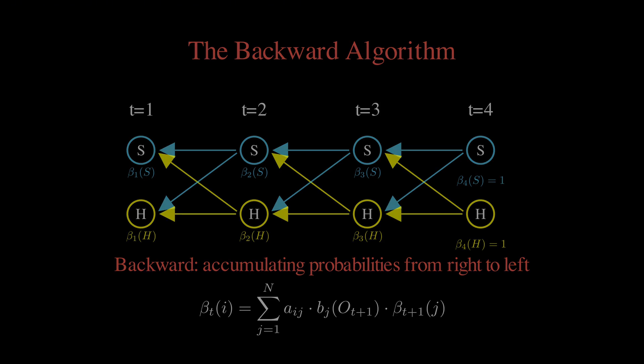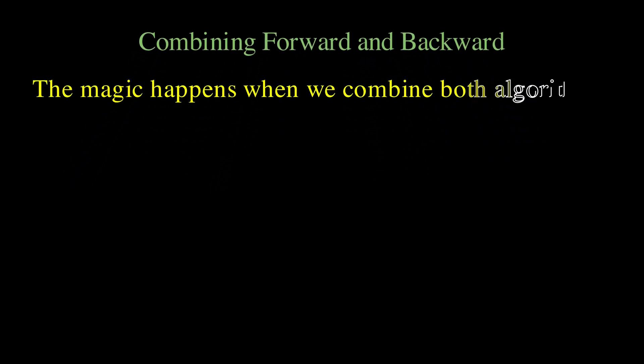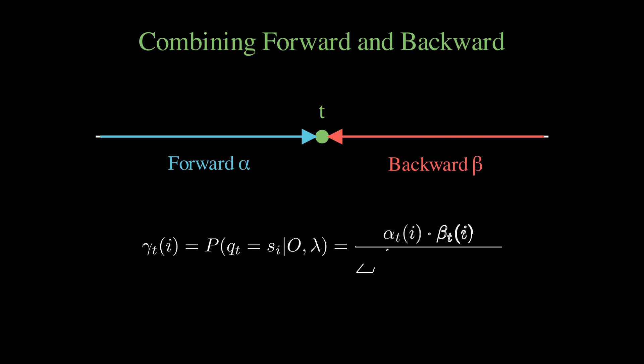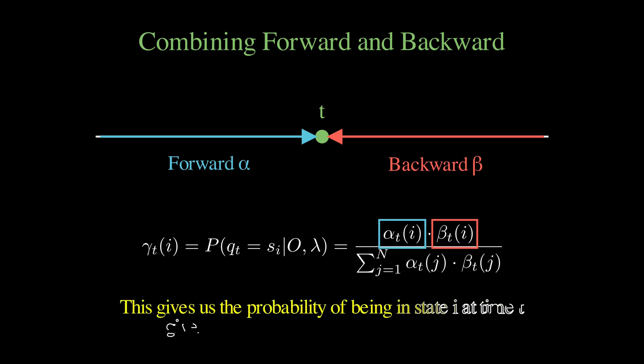Now, here is where the magic happens. When we multiply alpha t of i and beta t of i together, we get the probability of the entire observation sequence and being in state i at time t. And if we normalize this by dividing by the sum over all states, we get gamma t of i, which is exactly what we wanted, the probability of being in state i at time t given all the observations.